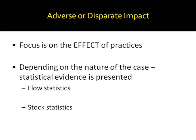Let's start by looking at adverse or disparate impact. Remember that the focus is on the effect of employer practices. Depending upon the nature of the case, normally what happens is statistical evidence is presented. There are two major types of statistical evidence. One focuses on employee flows in the organization, and the other is based upon stocks. Flow statistics would look at hiring, termination, and promotion rates. Stock statistics would compare the presence or percentage of protected class individuals against their availability in the labor market.